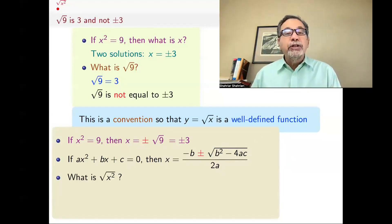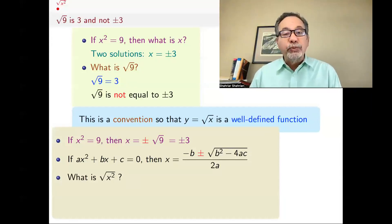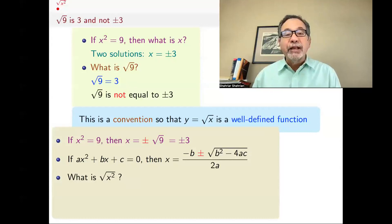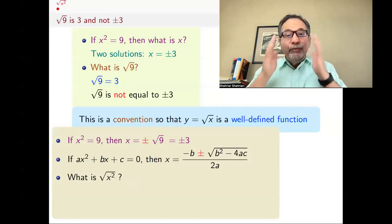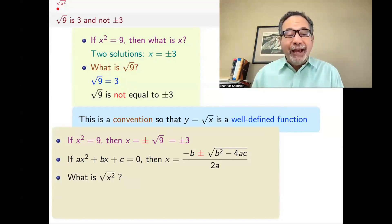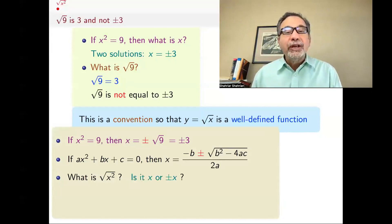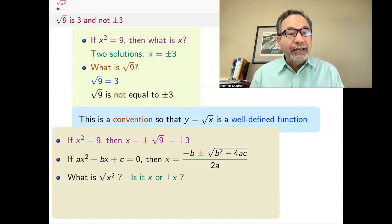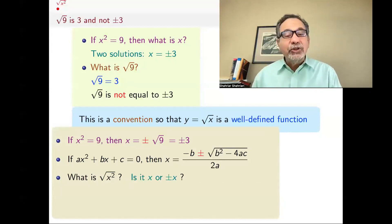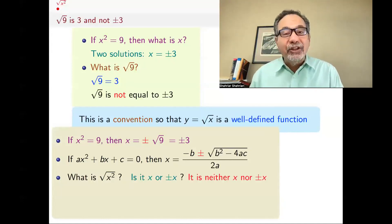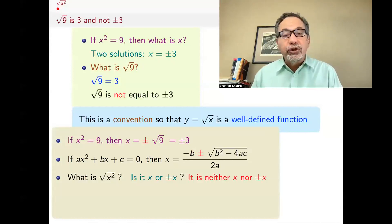So someone might ask you: what's square root of x squared when x is an unknown — an indeterminate, something we don't quite know what it is, and we have given it a name x. Is the answer x or plus or minus x? And the answer is that it's neither — it's neither x nor plus or minus x.